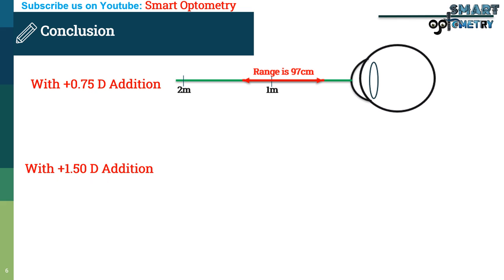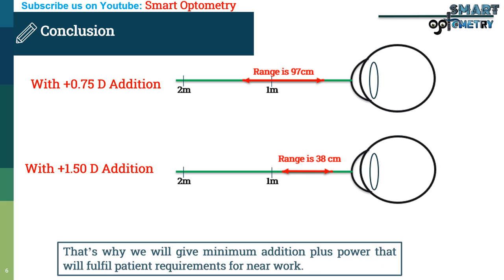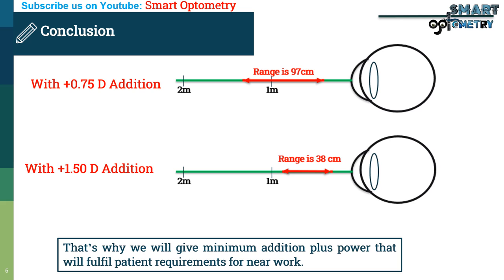And with plus 1.5 diopter addition power, the range of near work is only 38 cm, which is very less and patient won't be able to do intermediate distance work like using computer. That's why we will give minimum addition plus power that will fulfill patient's requirements for near work.